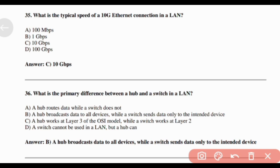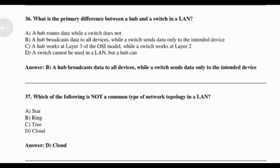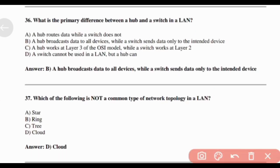What is the typical speed of a 10G Ethernet connection in a LAN? Answer: Option C — 10 Gbps. What is the primary difference between a hub and a switch in a LAN? Answer: Option B — A hub broadcasts data to all devices, while a switch sends data only to the intended device.